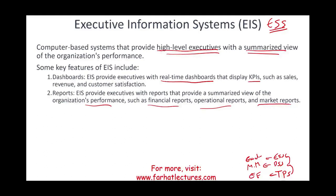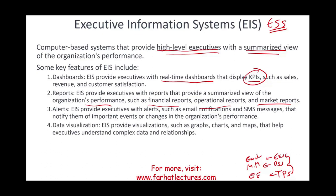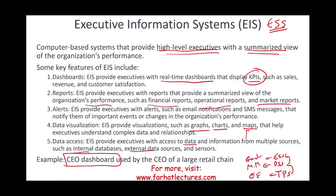Executives are interested in overall company performance — not specific products or areas, but how everything is going overall. KPIs, or Key Performance Indicators, gauge the company's progress and can vary by organization. The ESS also has data visualization features like graphs, charts, and maps to help executives understand complex data relationships, as well as data access from multiple sources including internal databases, external databases, and sensors. A good example is a CEO dashboard — for instance, one used by the CEO of a large retail chain.